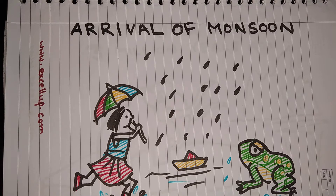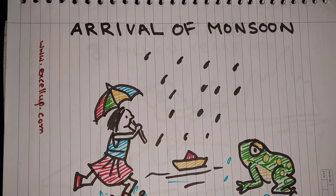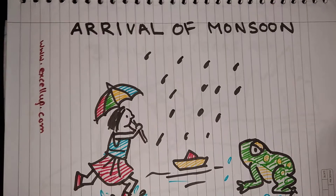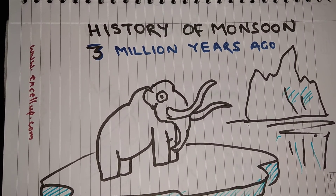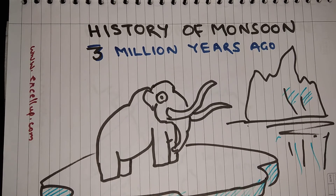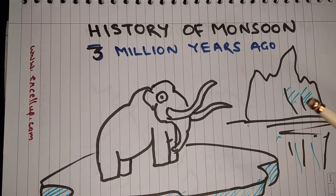When monsoon arrives in India, it fills everyone with joy. This happens because monsoon not only gives relief from scorching summer but also brings immense benefits for agriculture. A good harvest strengthens the economy, giving much needed relief to the rulers and the people.